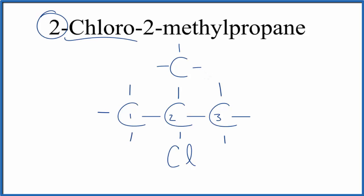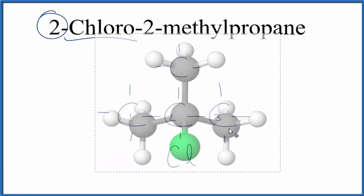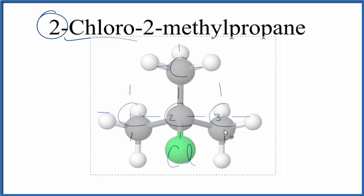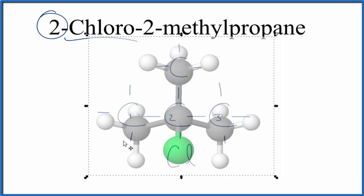If we wanted to look at this in three dimensions, a three-dimensional model of this 2-chloro-2-methylpropane would look like this. The blacks or the grays are the carbons, and the hydrogens are white. We have this green chlorine down here. So that would be the three-dimensional structure of 2-chloro-2-methylpropane.